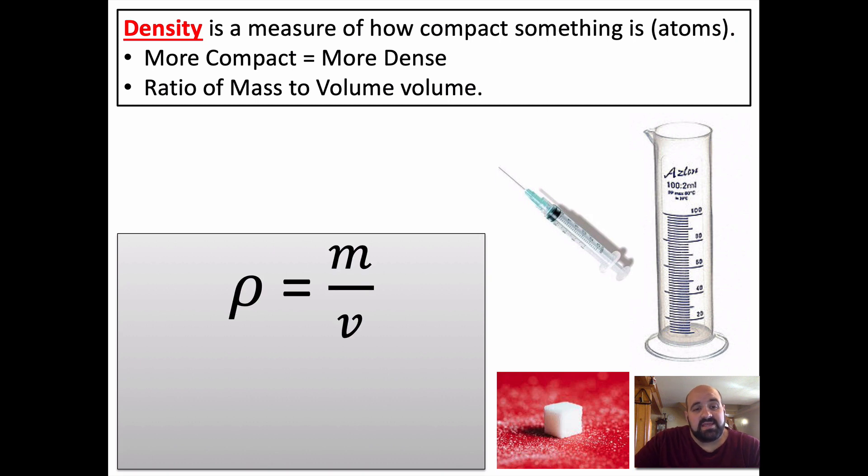And I have atoms written there because everything is made of atoms. Everything is made of protons, neutrons, and electrons. But some substances just have more protons than others. And the closer these particles are together, the more dense something is. So the more compact something is, the more dense it is. And density is simply mathematically a ratio of mass to volume. That simply means mass divided by volume. There is a formula for density. Rho, it's not really P, it's the Greek letter rho. That's pretty much a scientific symbol for density.